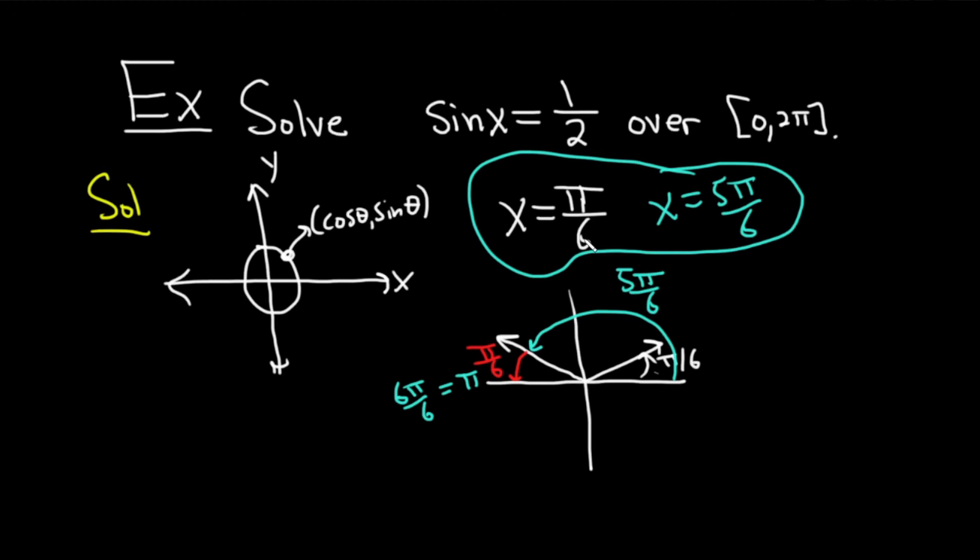Again, once you know you have π over 6, you know there's going to be another angle and you ask yourself, okay, this is equal to one half. So where else is sine positive because one half is positive? Well, quadrant 2. And you say, okay, what is the angle that is in quadrant 2 that has a reference angle of π over 6? Well, that angle is 5π over 6.